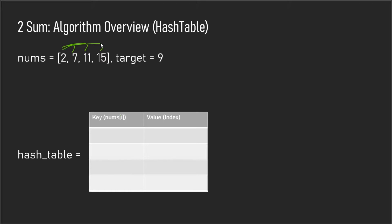The brute force approach has a runtime of O(n²), so we can do a lot better than that using a concept called complement. A complement is: if we write the equation a + b = 9, and a is equal to the current index value — in our case, 2 — then we have 2 + b = 9, so b would be our complement. It's the value you need to make the equation true.